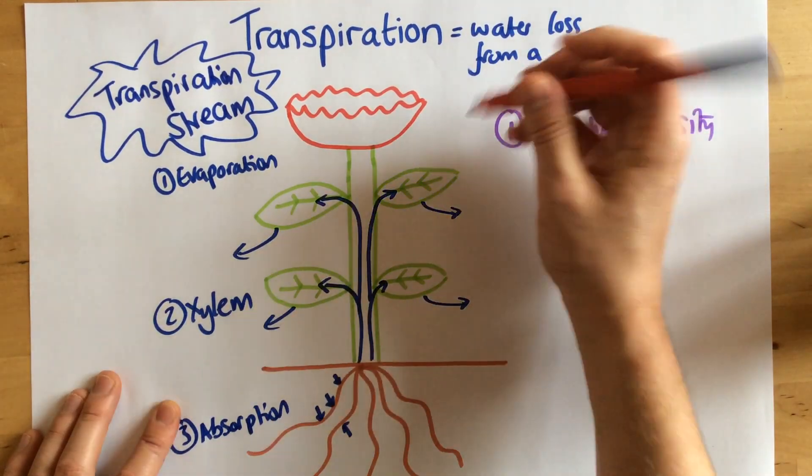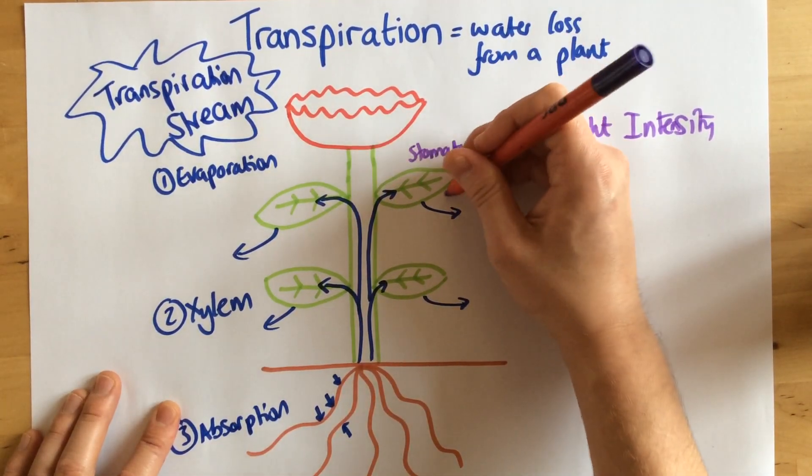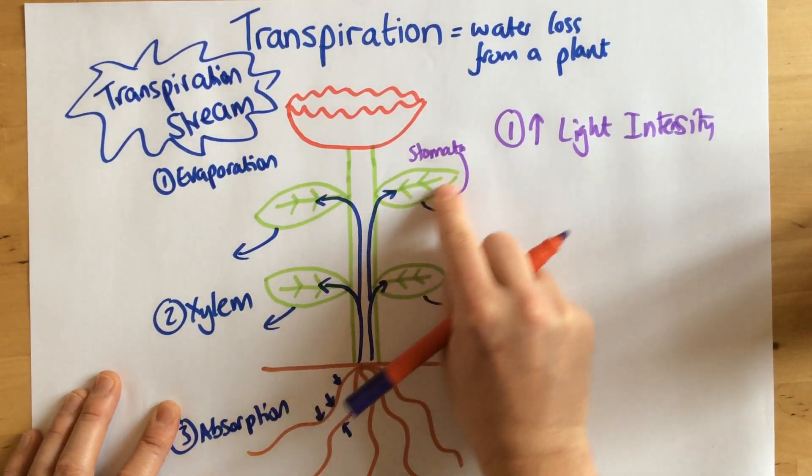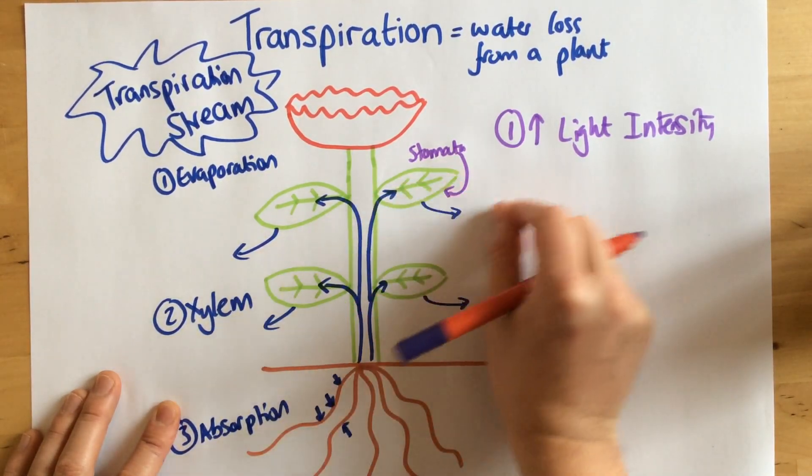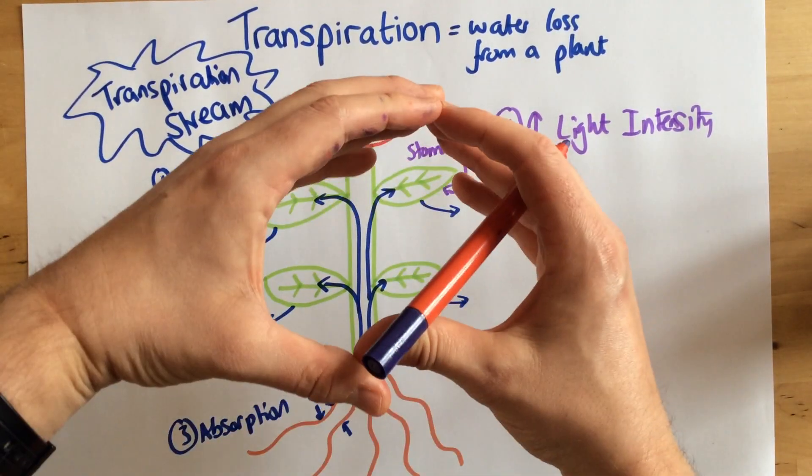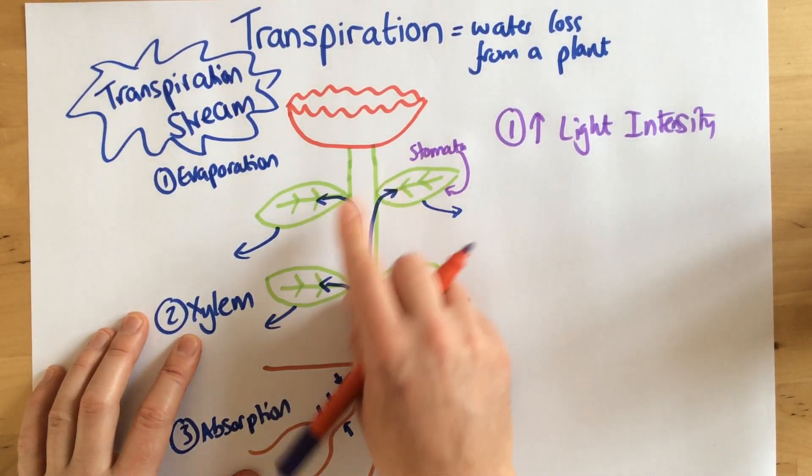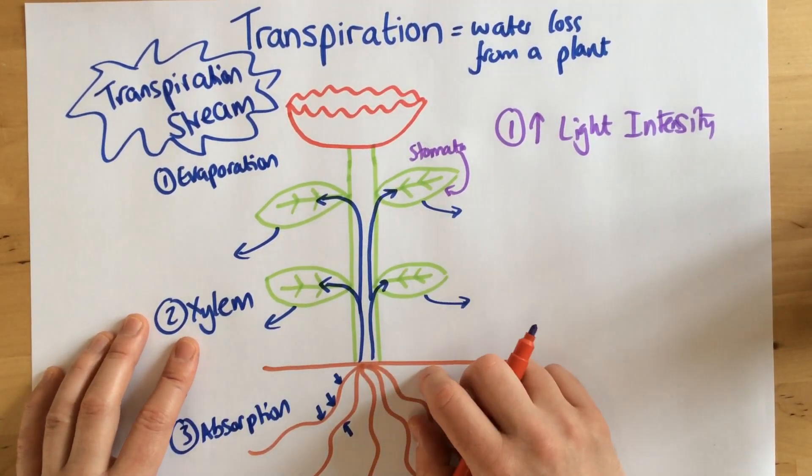Now the reason for that is, I briefly mentioned before, stomata in the underside of the leaves. Those are just little holes that allow the water vapor to diffuse out. If it's lighter, the stomata are open, which means more water can be lost through the leaves. Therefore, a faster rate of transpiration.